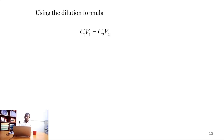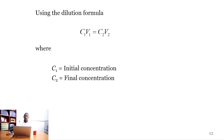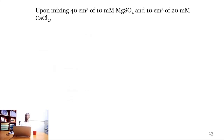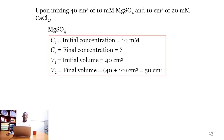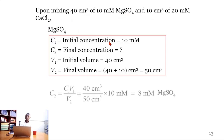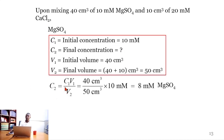Using the dilution formula C₁V₁ = C₂V₂, where C₁ is initial concentration, C₂ final concentration, V₁ initial volume, and V₂ final volume: upon mixing 40 cm³ of 10 mM magnesium sulfate with 10 cm³ of 20 mM calcium chloride, for magnesium sulfate the initial concentration is 10 mM, the initial volume is 40 cm³, and the final volume is 50 cm³ (40 + 10). Substituting into the dilution formula gives 8 mM magnesium sulfate.